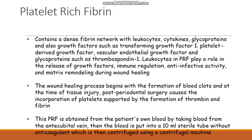The wound healing process begins with the formation of a blood clot at the time of tissue injury. Post-periodontal surgery causes the incorporation of platelets supported by the formation of thrombin and fibrin. PRF is obtained from the patient's own blood by drawing blood from the antecubital vein, placing it into a 10 ml sterile tube without anticoagulant, and then centrifuging using a centrifugal machine.